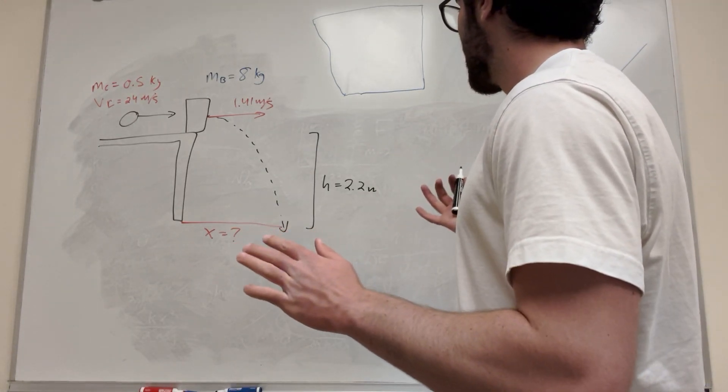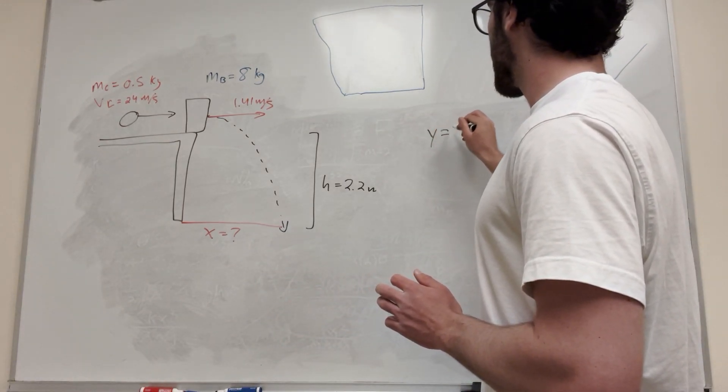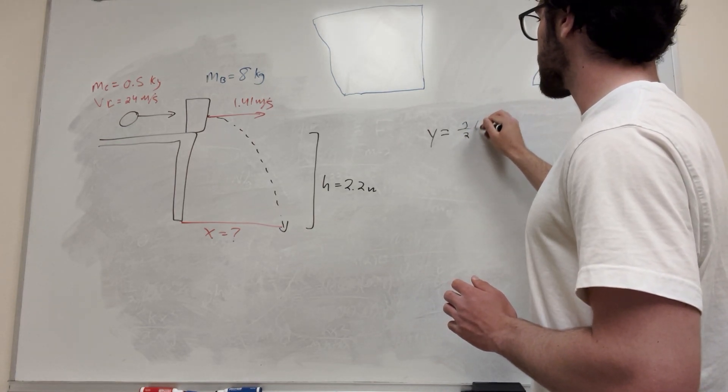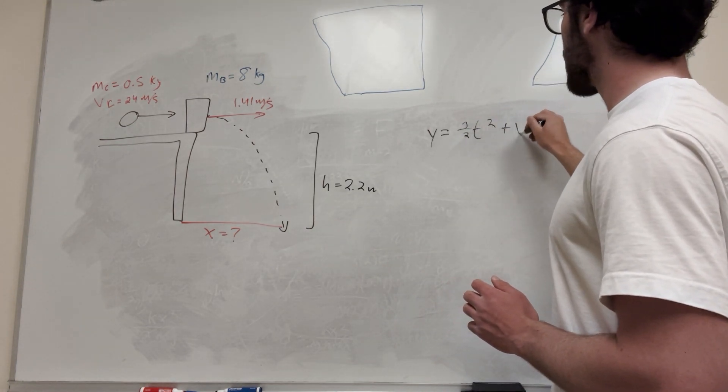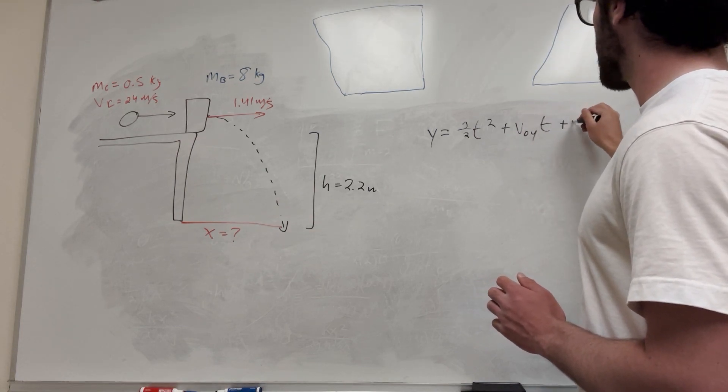So let's do it. Alright, so free fall. We have free fall. Let's use our kinematics equations. y is going to be gravity divided by 2 times time squared plus velocity initial in the y direction times time plus height initial.